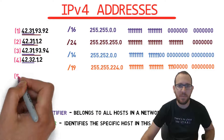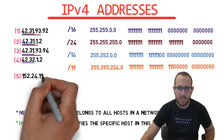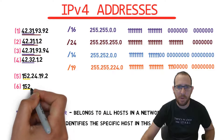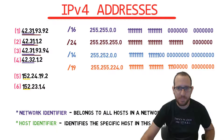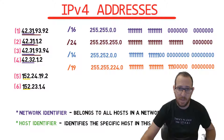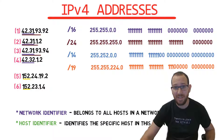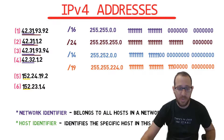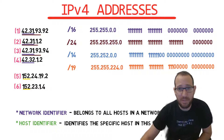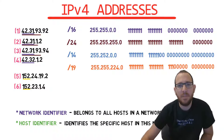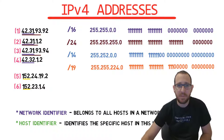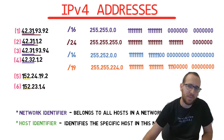Let's consider the following addresses. Are these two addresses part of the same network? As we know, it depends on the subnet mask. If the network prefix is /8, then they are part of the same network and share the same network ID. On the other hand, if the network prefix is /16, then they have different network IDs and don't belong to the same network. But what happens with values in between?